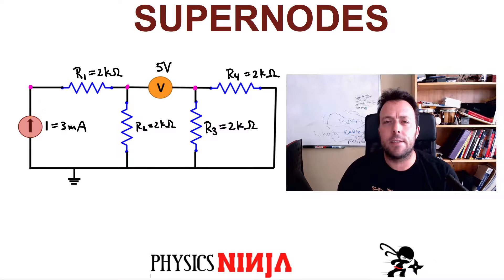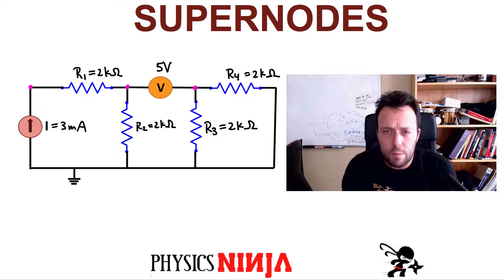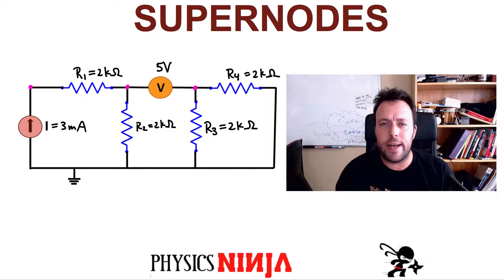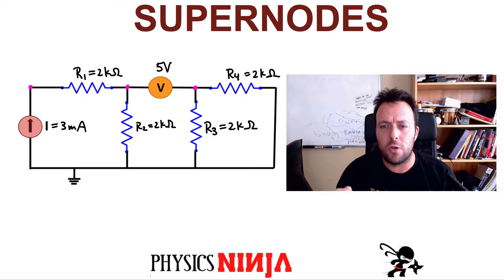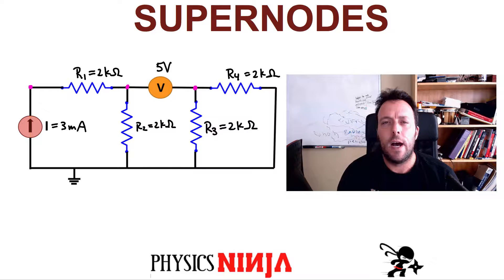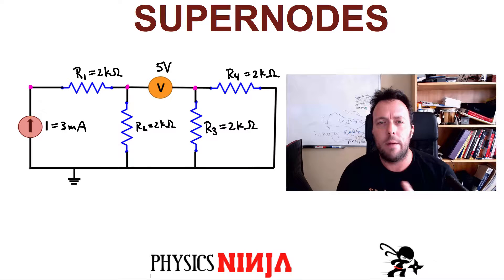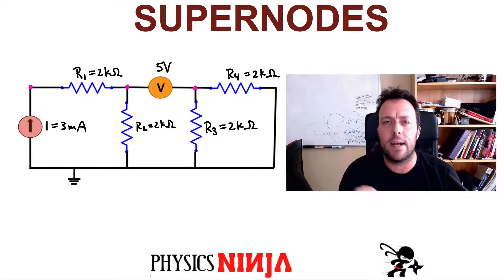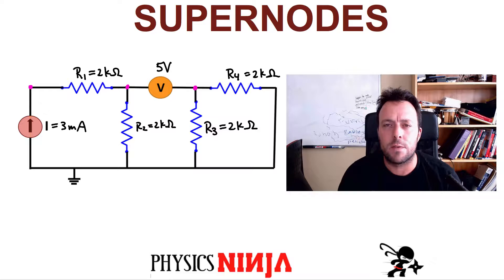Hi everybody, PhysicsNinja here today. I want to look at something called supernodes, and what we're going to do is analyze the circuit I have in front of you. We've got a whole series of resistors — they're all 2 kilohm resistors. I've also got two sources: a constant current source that puts out 3mA, and a constant voltage supply that's 5V.